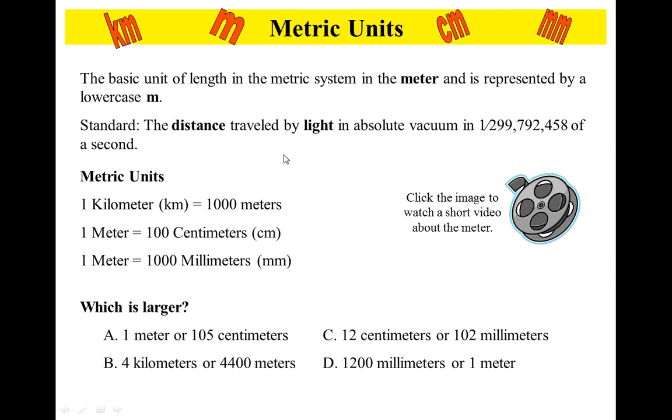The basic unit of length in the metric system is the meter, represented by a lowercase m. A meter is defined as the distance traveled by light in an absolute vacuum in one 299,792,458th of a second. That's confusing—the earlier explanation was clearer when they took the distance from the North Pole to the equator and divided it by ten million.